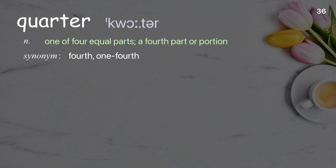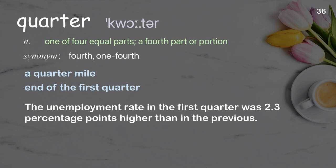Quarter: one of four equal parts; a fourth part or portion. Examples: a quarter mile, end of the first quarter. The unemployment rate in the first quarter was 2.3 percentage points higher than in the previous.